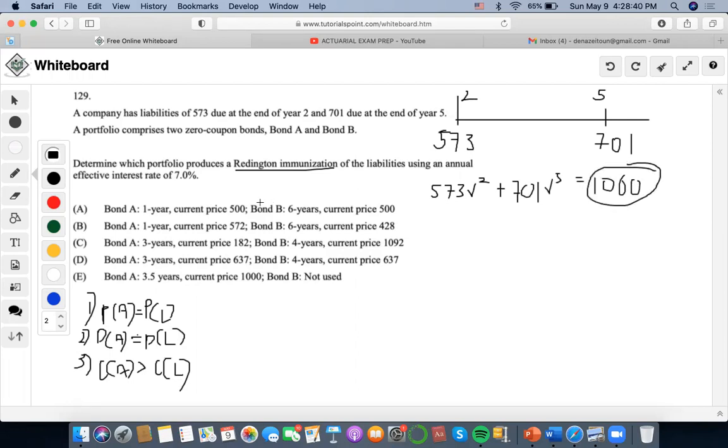Now let's find the ones that have a present value equal to one thousand. They already give us the current prices, which are another way of seeing prices at time zero. So we're just going to add these: 500 plus 500, that's one thousand, so this one's kept. 572 plus 428, that's also one thousand, so this one's kept. This one has a far-off number, so C is out. This one is one thousand, so this one's kept.